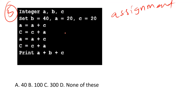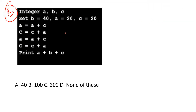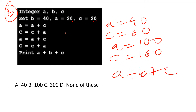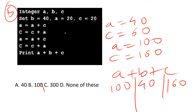Here comes the fifth question. The logic involves assignment operators. We must consider the most recently updated value of each variable at each statement. Variables a, b, c are assigned 20, 40, 20. Then a = a + c = 20 + 20 = 40. Then c = c + a = 20 + 40 = 60. Then a = a + c = 40 + 60 = 100. Then c = c + a = 60 + 100 = 160. So a + b + c = 100 + 40 + 160 = 300. Option C is the correct answer.